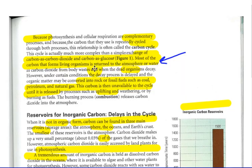Most of the carbon that forms living organisms, such as you or me, is returned to the atmosphere or water as carbon dioxide from body wastes. And when the dead organisms decay, when mammals die, the carbon that is in their body is released in the atmosphere. And that occurs through decomposition.